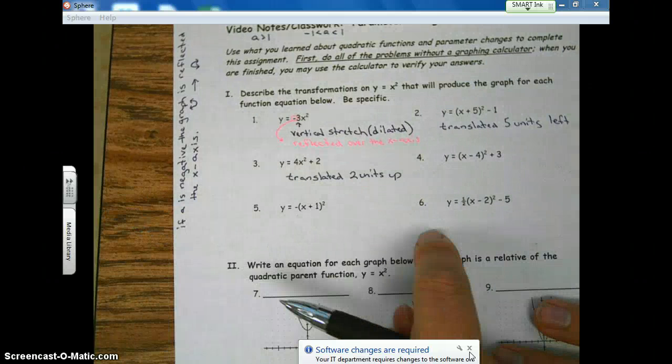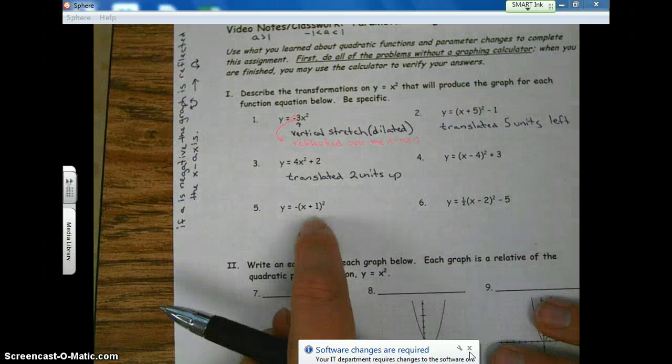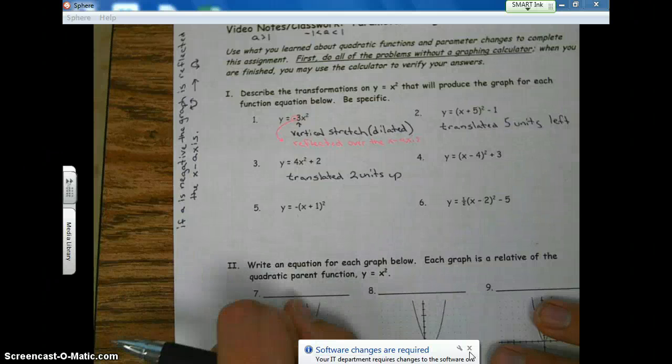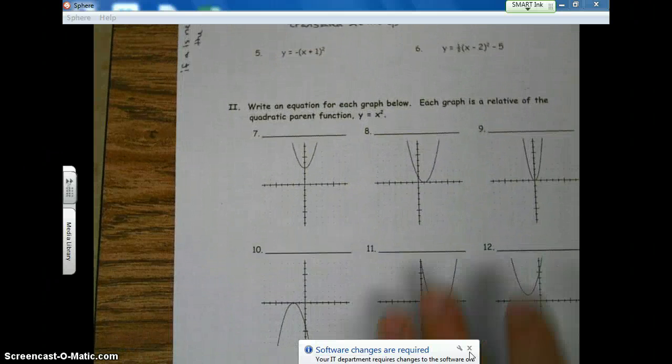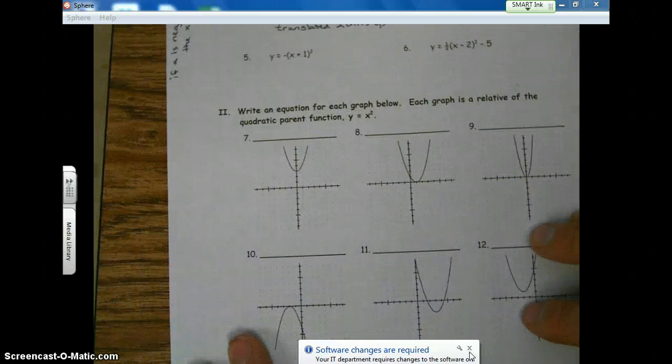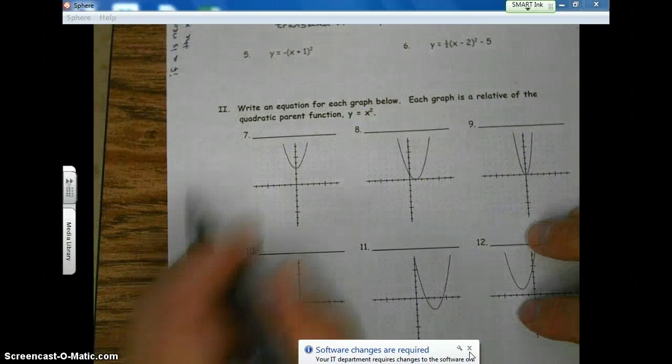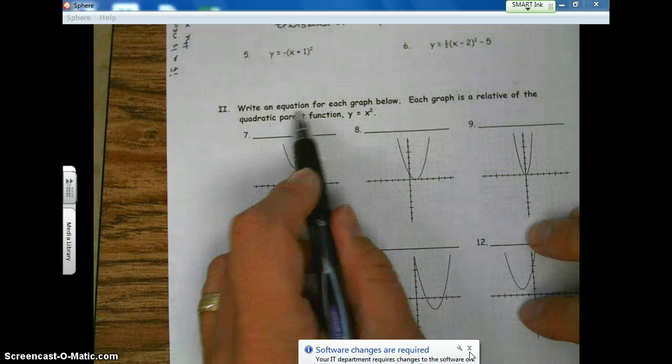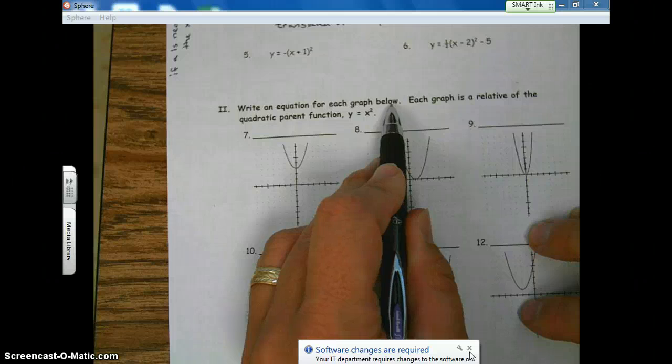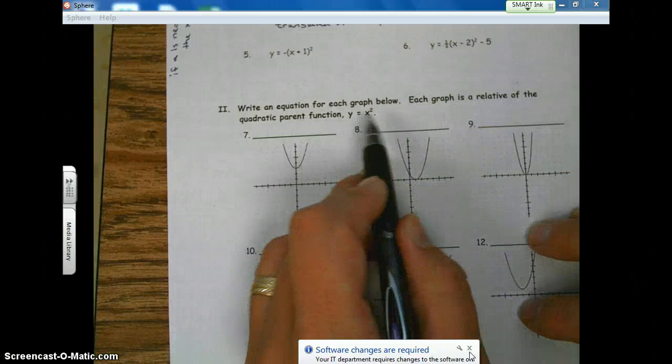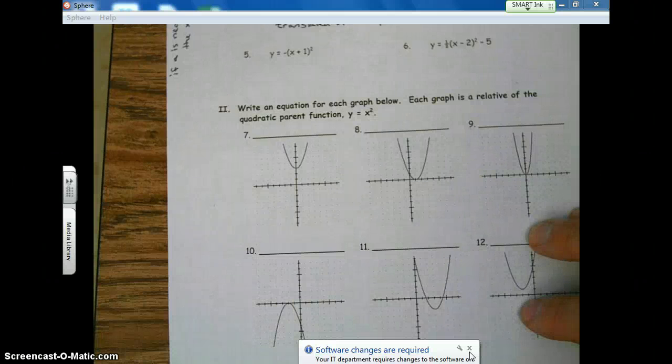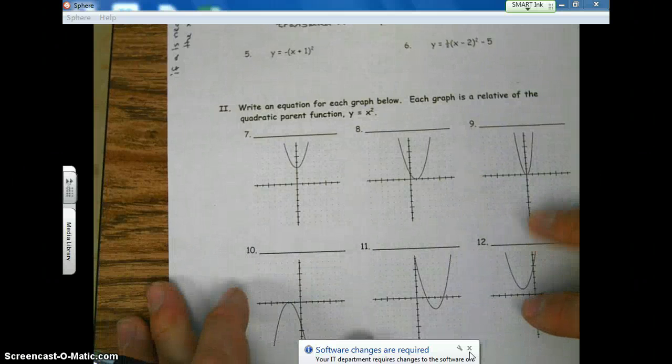So I want you to go through 1 through 6 and write down the transformations that you see. Let's take a look at number part 2. Part 2. Write an equation for each graph below. Each graph is a relative of the quadratic parent function, y equals x squared.